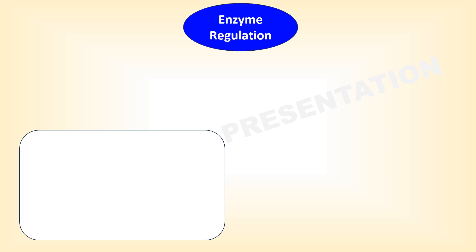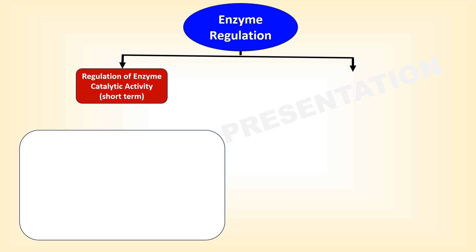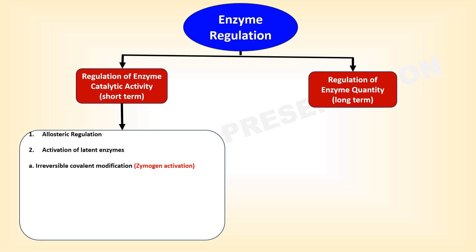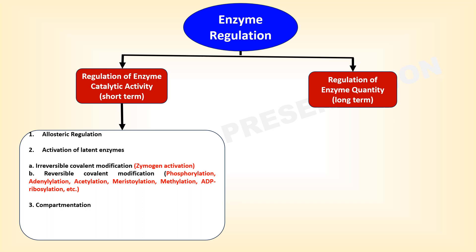Enzymes are generally regulated by two main mechanisms: regulation of enzyme catalytic activity, which is a short-term regulation process, and regulation of enzyme quantity, which is a long-term regulation process. Enzyme catalytic activity is regulated by allosteric regulation, activation of latent enzymes (irreversible and reversible covalent modification), compartmentation, isozymes, multi-enzyme complex formation, and by environmental factors.